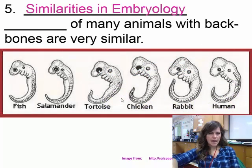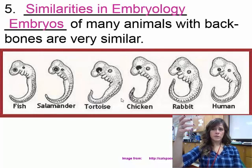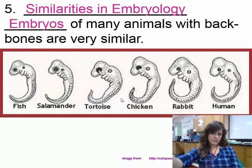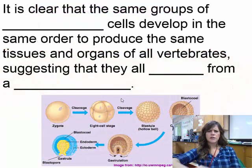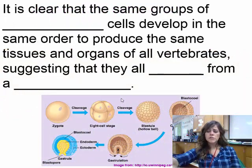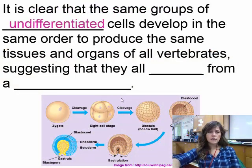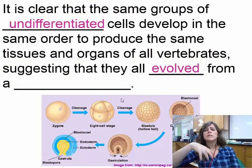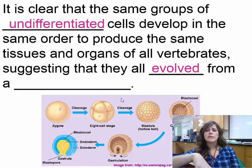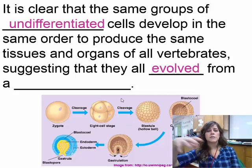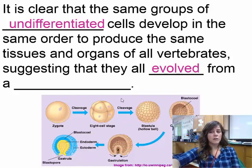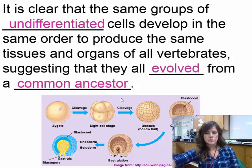Embryos of many animals with backbones look very similar in early development. This leads to the idea that if they look similar in early development, maybe they're coming from the same cells. The same groups of undifferentiated cells develop in the same order to produce the same tissues and organs of all vertebrates, suggesting that they all evolved from a common ancestor.